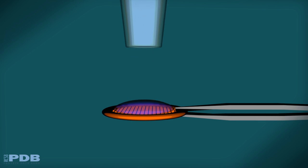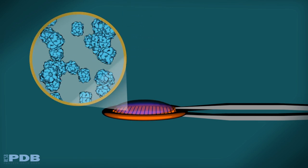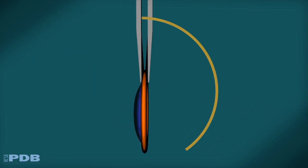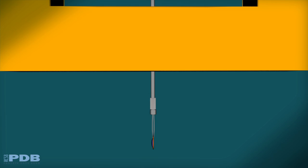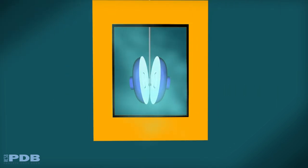In this method, a tiny amount of purified protein is placed onto a copper grid. A special machine spreads the sample in a single layer on the grid.